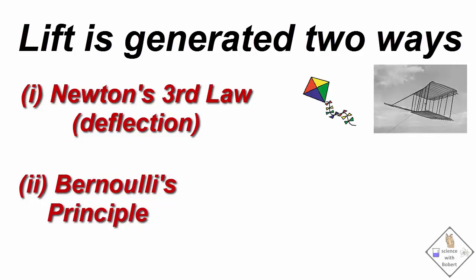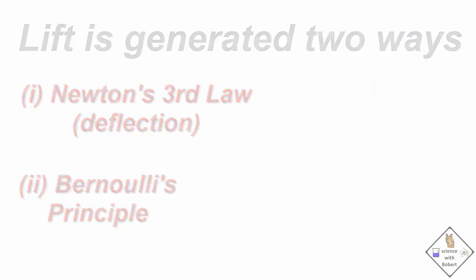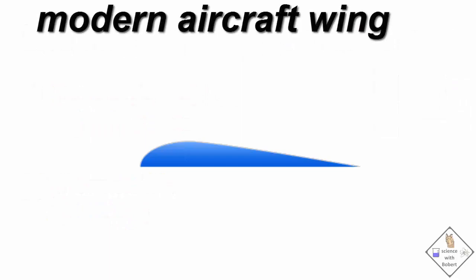Modern aircraft do not have flat wings like kites and Wright's glider. Modern aircraft wings are curved on top and look like this.